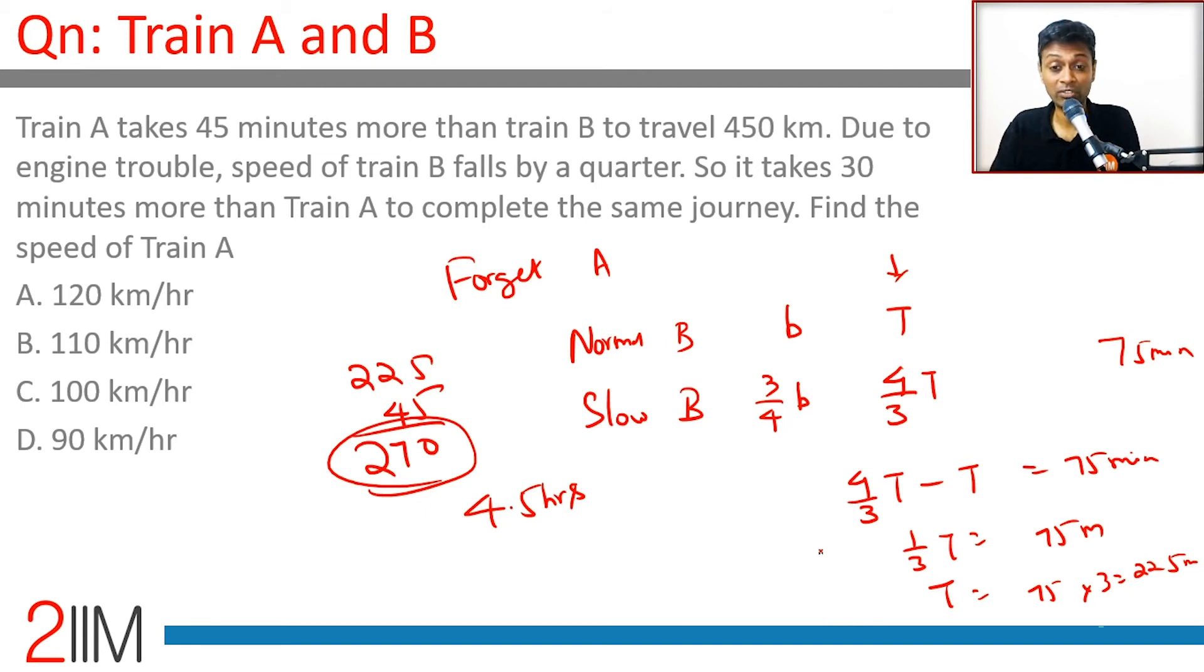Train A takes four and a half hours to travel 450 kilometers. Train A travels at 100 kilometers per hour.